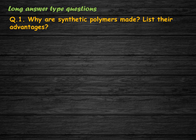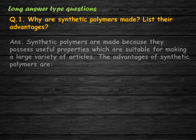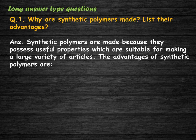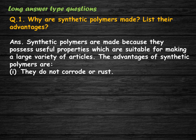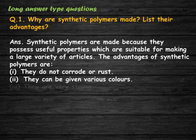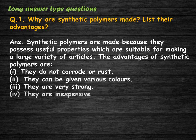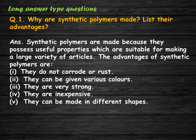Long answer type questions. Why are synthetic polymers made? List their advantages. Synthetic polymers are made because they possess useful properties suitable for making a large variety of articles. The advantages of synthetic polymers are: they do not corrode or rust; they can be given various colors; they are very strong; they are inexpensive; and they can be made in different shapes.